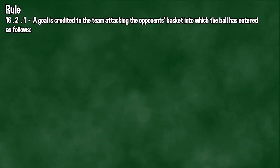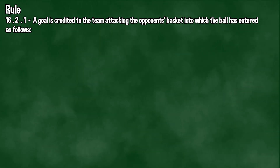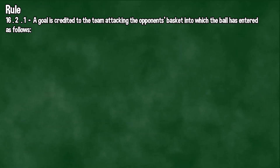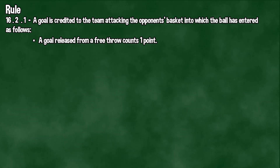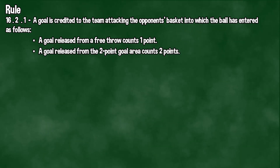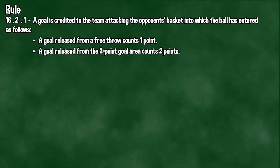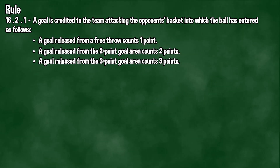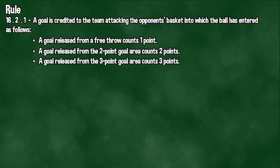Rule: A goal is credited to the team attacking the opponent's basket into which the ball has entered as follows. A goal released from a free throw counts one point. A goal released from the two-point goal area counts two points. A goal released from the three-point goal area counts three points.